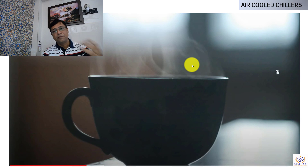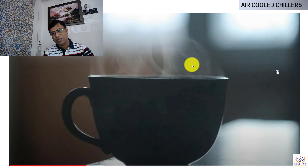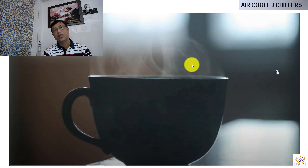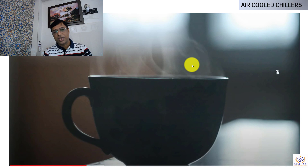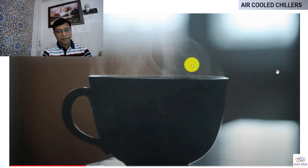Air-cooled chillers work on the principle of heat transfer — like a hot cup of tea kept for a certain amount of time gets cold because heat transfers from the hot to the low temperature zone. On that same principle, the refrigerant which is at high temperature transfers heat to the air with the help of fans mounted on top of the air-cooled chillers. They circulate air over the coils and the refrigerant gets cooled — that is how air-cooled chillers work.